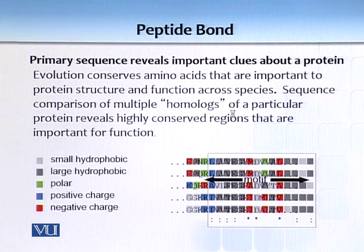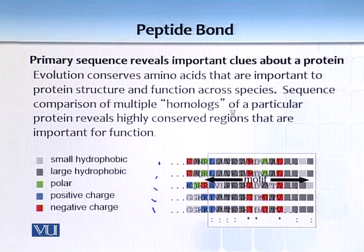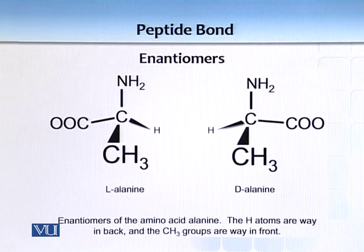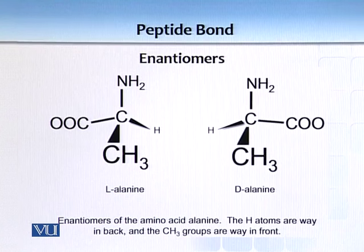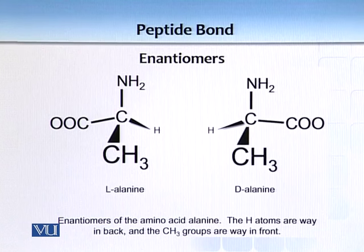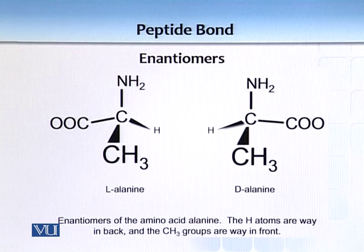These sequences are all from different species, and you can see that certain regions are conserved. Quite often in nature, sequence is conserved. If you find a new protein, you can compare it with various databases, and if a similar sequence is already known, you can infer its function from that.